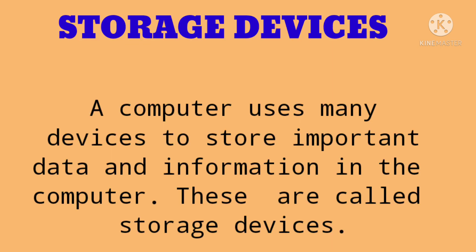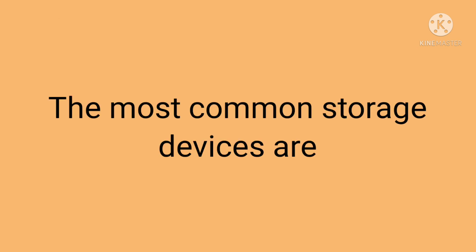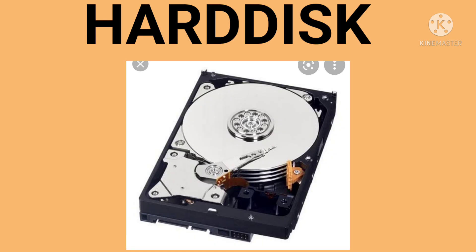Next is storage devices. A computer uses many devices to store important data and information; these are called storage devices. The most common storage devices are: number one, hard disk. A hard disk is like a rectangular box. It is fixed inside the CPU box and it can store a huge amount of data.